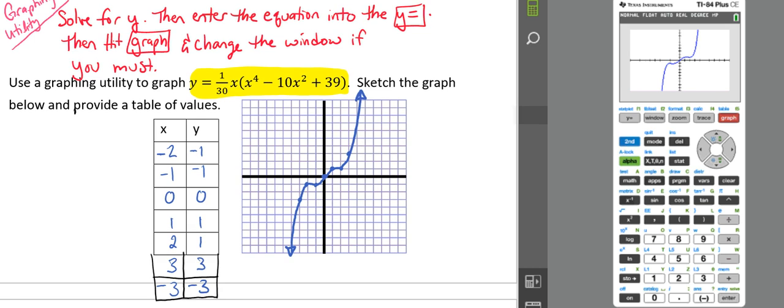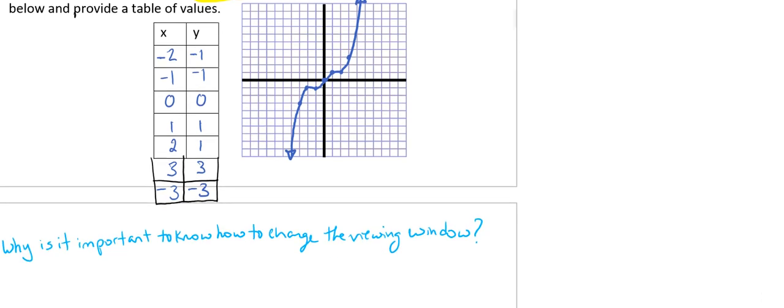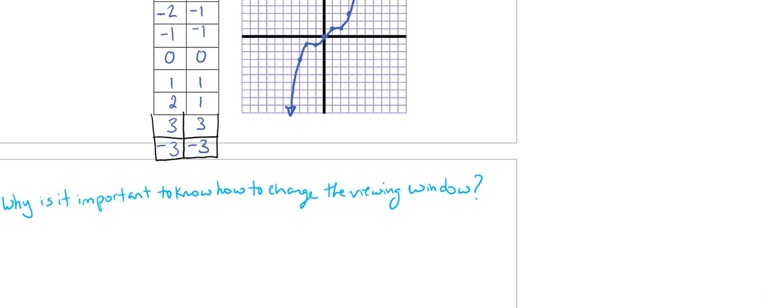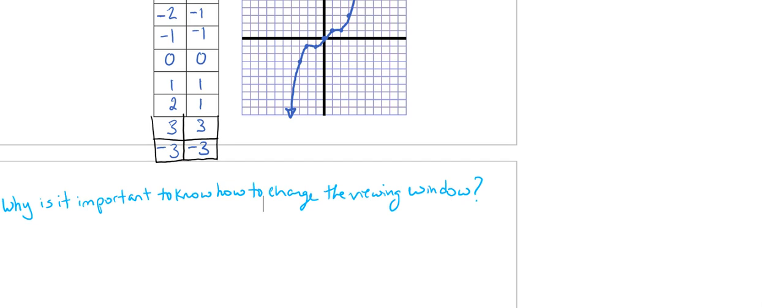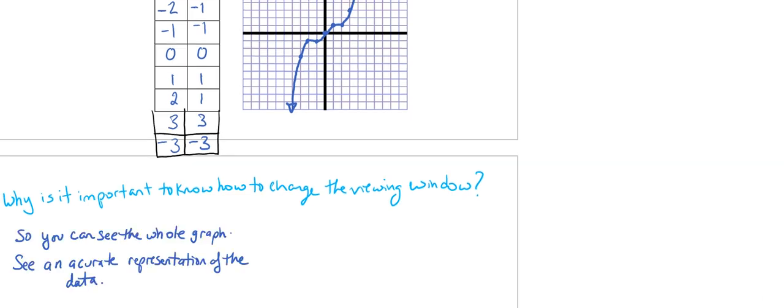So that kind of brings us to a pretty important question, and that question is, why is it important to know how to change the viewing window on a graphing utility? And that answer is so that you can see the whole graph. So you can see an accurate representation of the data, as we showed during this example.